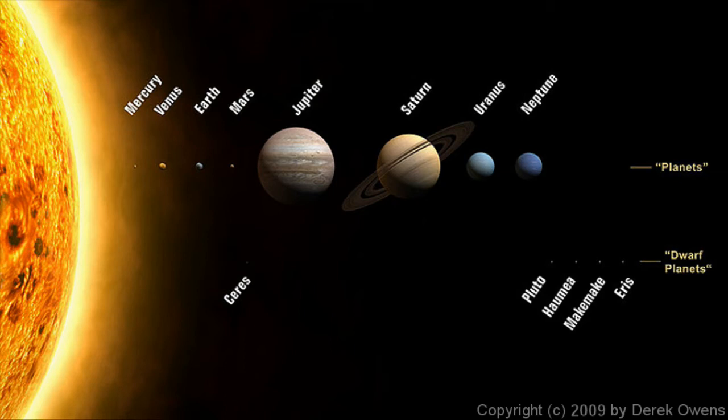And there are other dwarf planets that we know about in the solar system as well. Ceres here is an asteroid. It's just a tiny little dot. You can barely see it right there. But this shows you visually that the Sun is clearly the largest thing in the solar system.